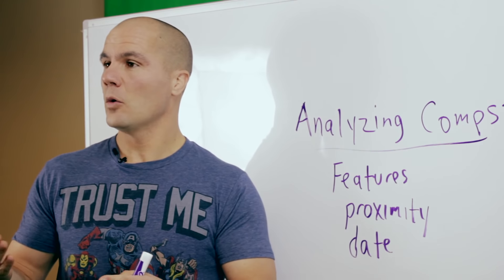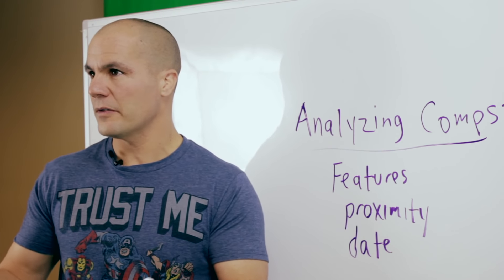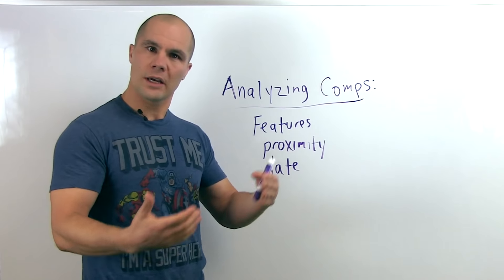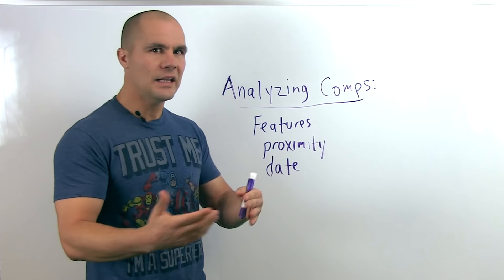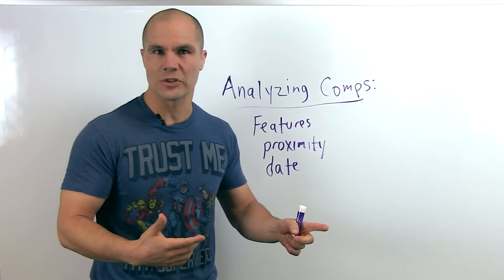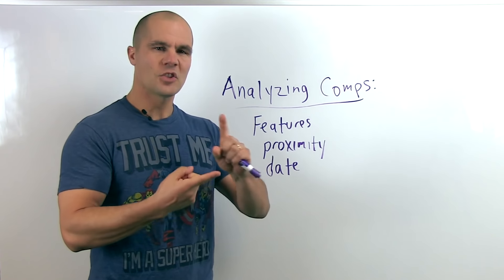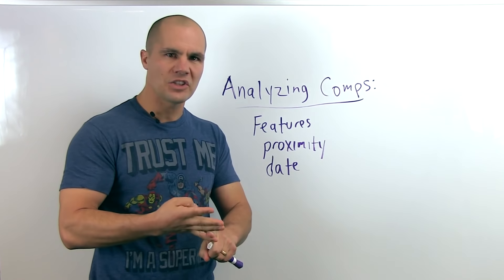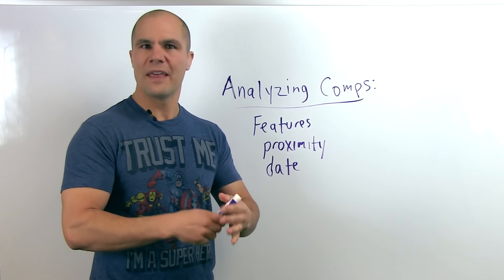So if we're going to be looking at what's the value of this deal I've got, let's call it the subject property, and we look at a comp, we want to make sure that any comps we look at are similar in features. Now what do I mean by features? I mean square footage, bedrooms, bathrooms, foundation, lot size, that sort of thing.